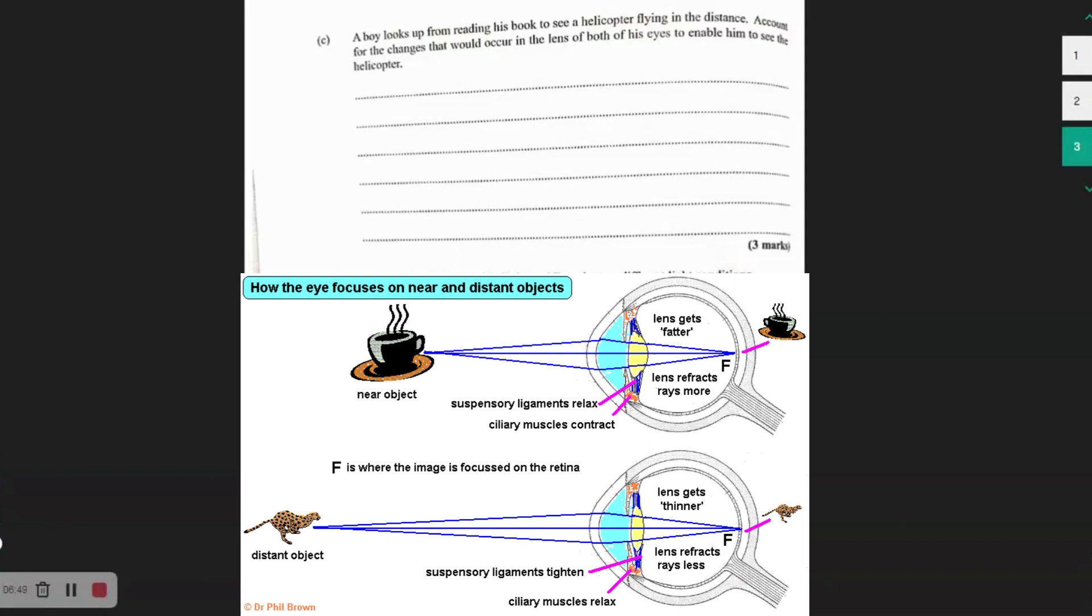So the ciliary muscles would relax while the suspensory ligaments would contract or be pulled tight, and this will allow the lens to be pulled thinner to accommodate for the change and the fact that he's looking at something at a distance and the angle that the light rays are coming in to allow it to fall directly on the retina for him to be able to see this object.